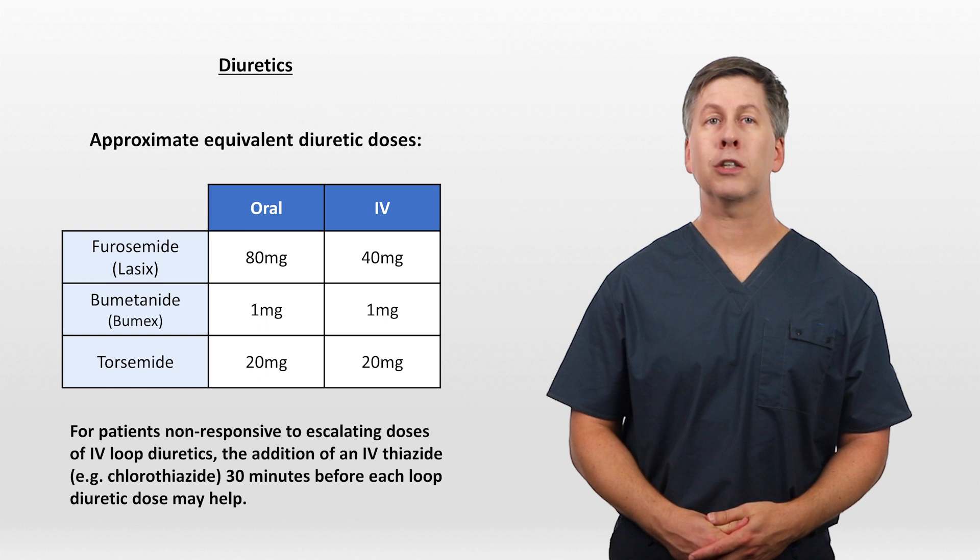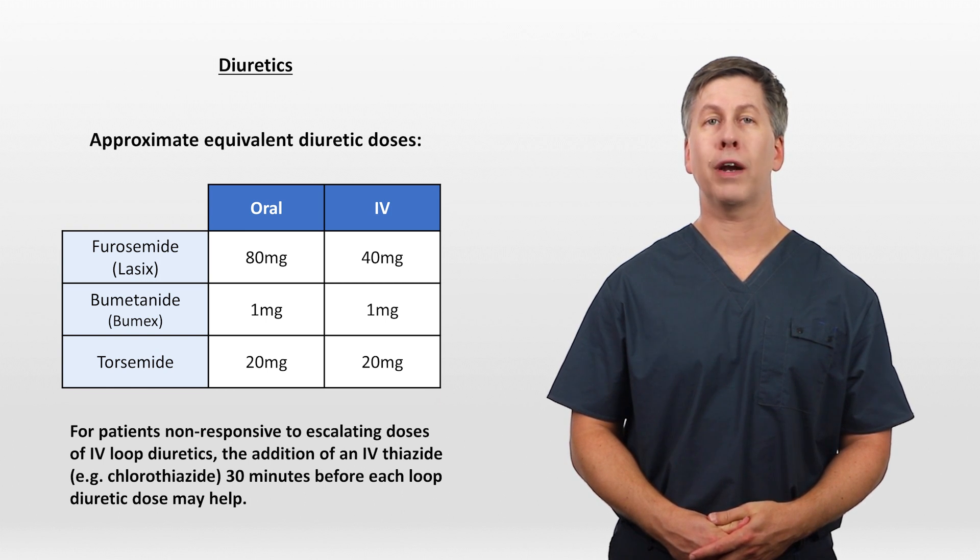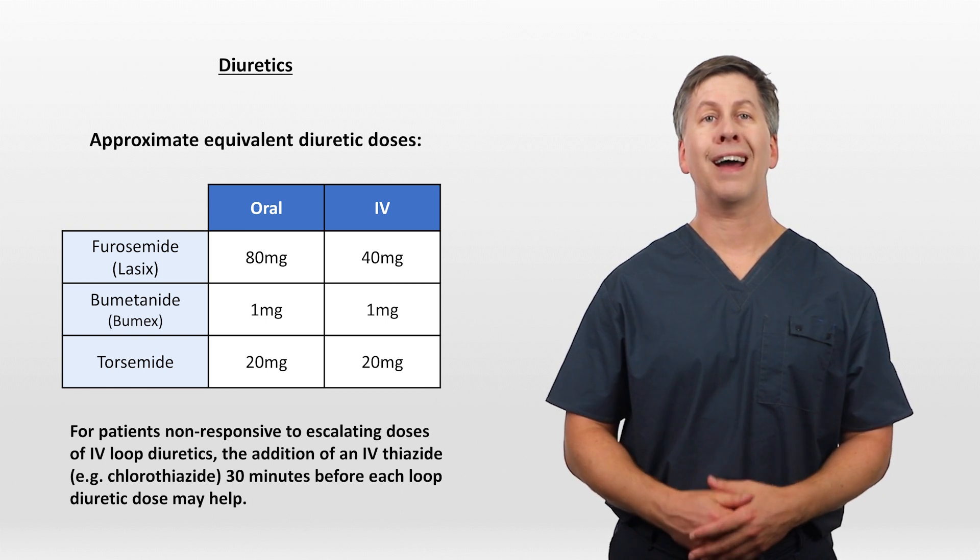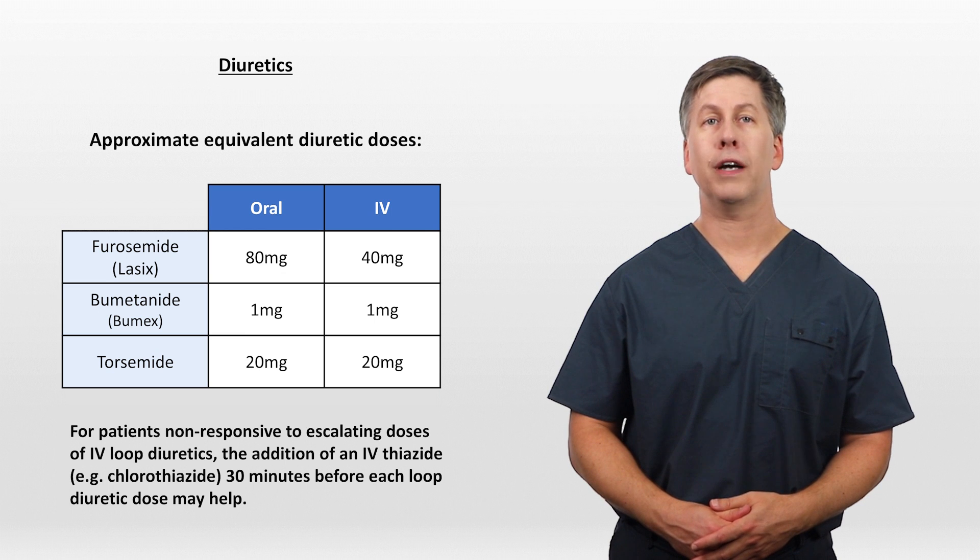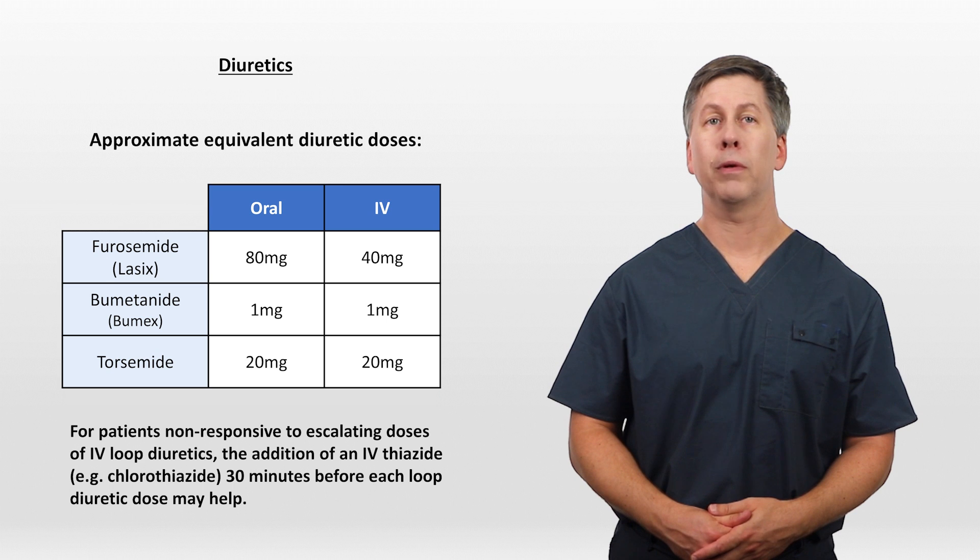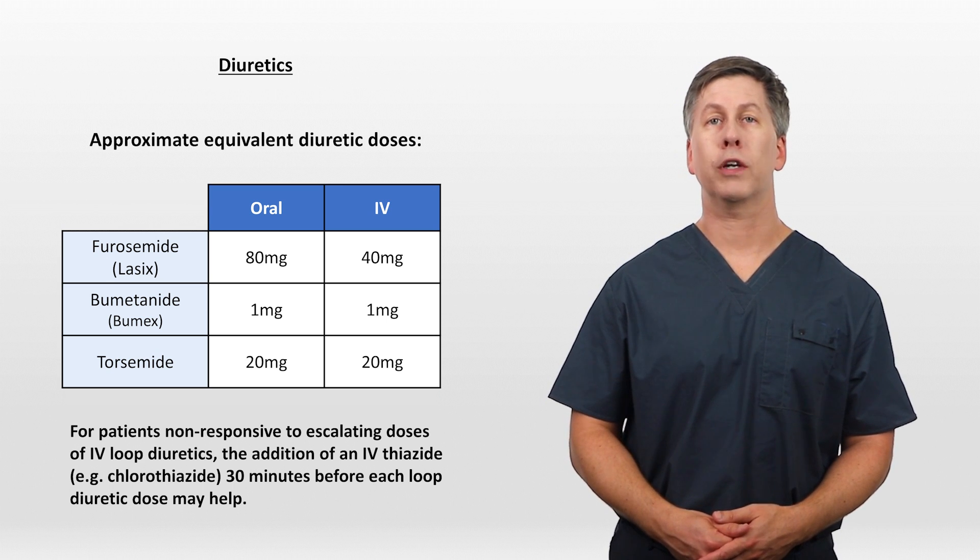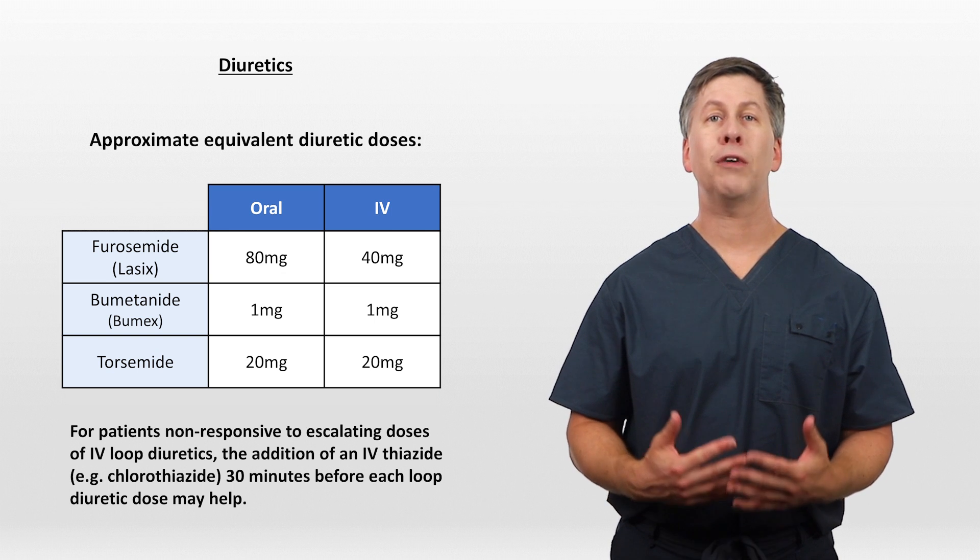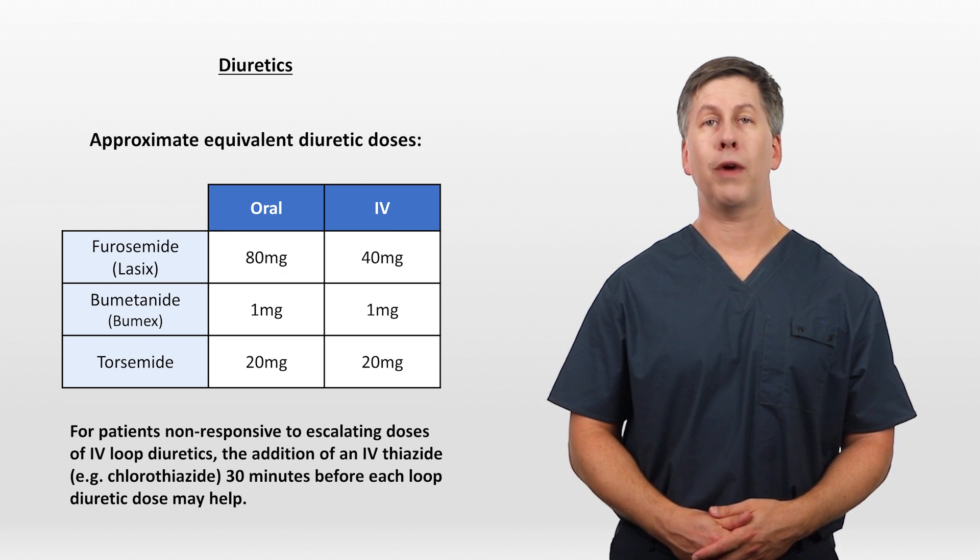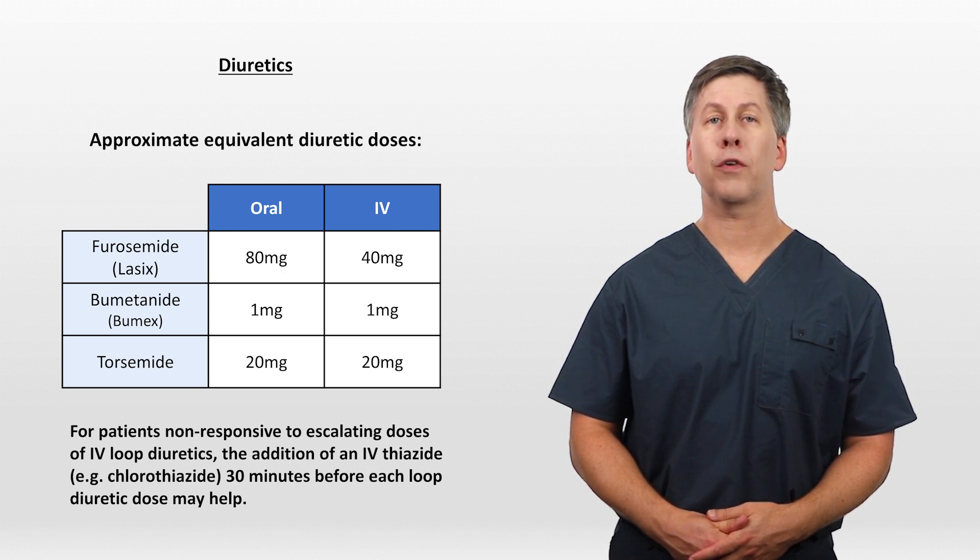For patients who are non-responsive to escalating doses of IV loop diuretics, the addition of an IV thiazide such as chlorothiazide, marketed as Diuril, 30 minutes before each loop diuretic dose may help. As far as I know, there is no evidence for this practice, but it is very common. And if there is still inadequate response to diuretics, ultrafiltration is another option to consider.